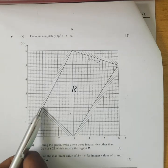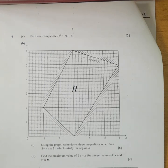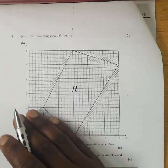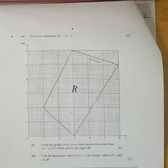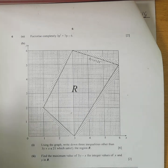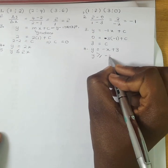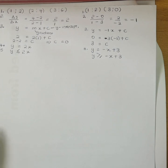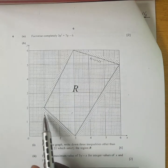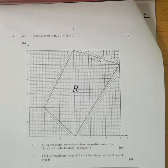We obtained the equation of this line as Y equals minus X plus 3. We now write down the inequality. Can you see that the region below the line is shaded? This implies that the region that is wanted is greater than. So we write Y is greater than or equal to minus X plus 3. Since the line is bold, we write greater than or equal to, not strictly greater than.